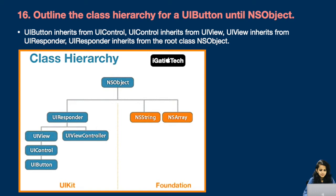Question number 16: Outline the class hierarchy for UIButton until NSObject. UIButton inherits from UIControl, UIControl inherits from UIView, UIView inherits from UIResponder, UIResponder inherits from the root class NSObject. Here I have added a graph representation for better understanding — have a look.